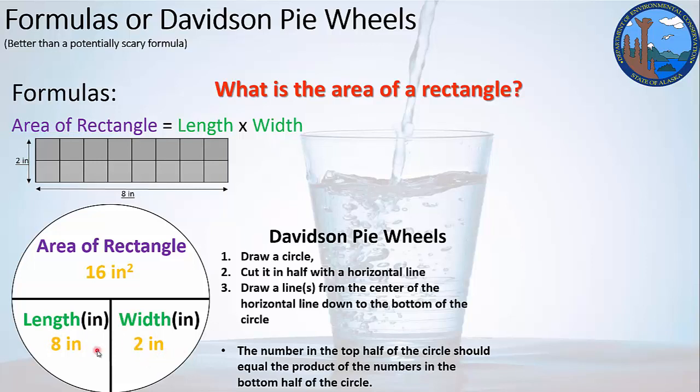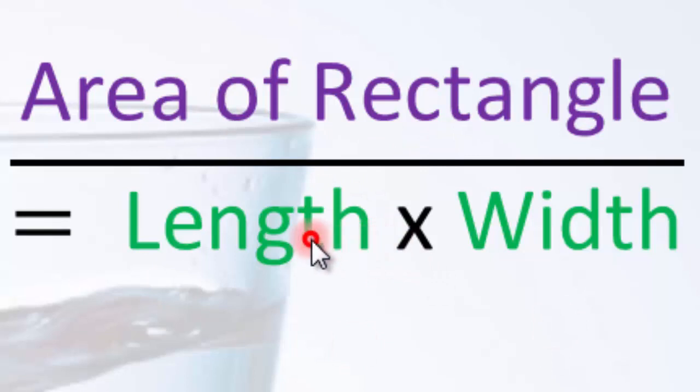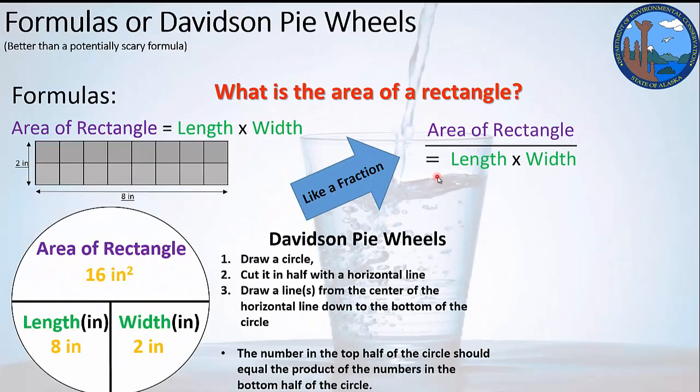When we multiply these two terms together, we add the exponents to get 16 inches squared. So another way to look at this system is an area of a rectangle over length times width. So if we want to look at our Davidson pie wheel similar to a fraction, we've got a division line here, which is what the fraction line is, and we've got the area of a rectangle.